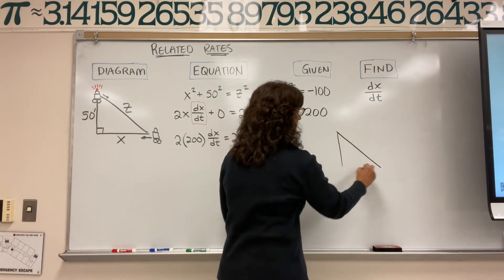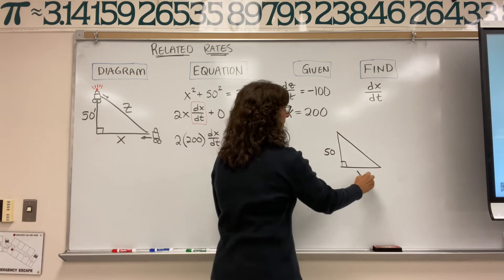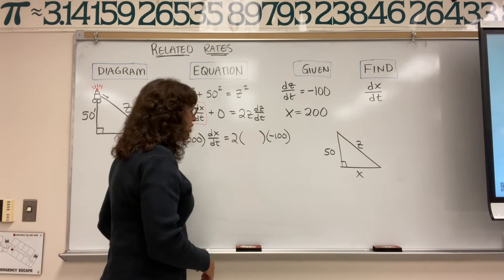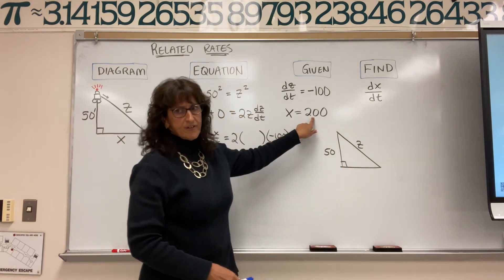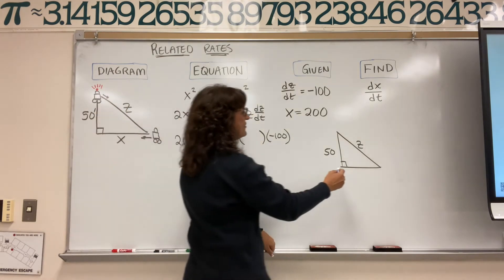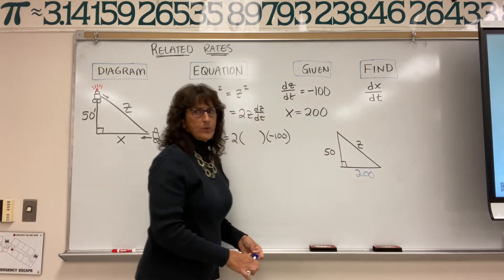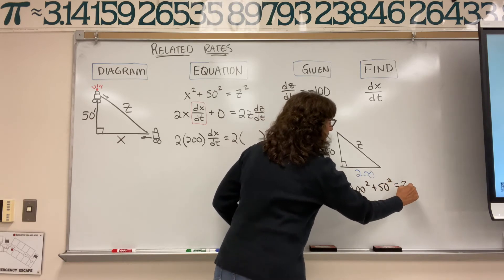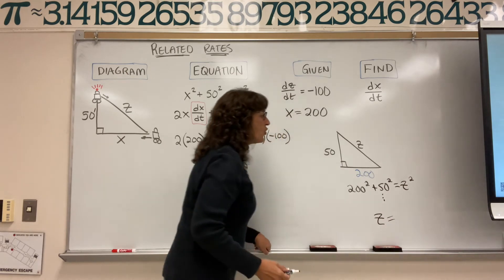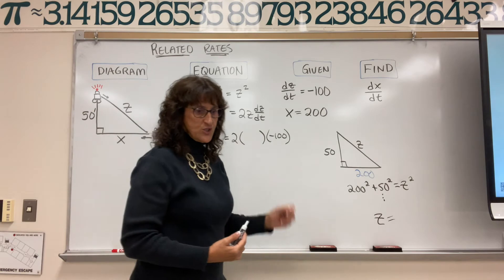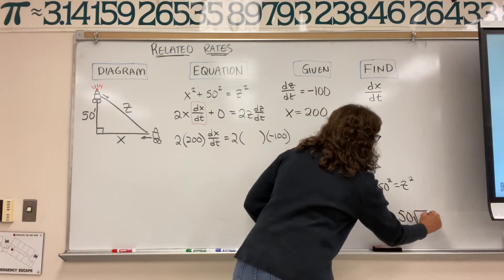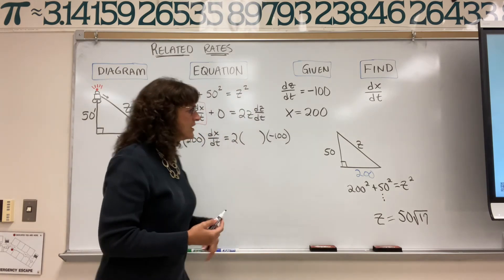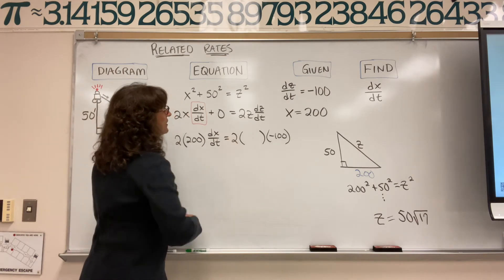Off to the side, looking at our diagram: we have 50, X, and Z. The patrolman is 50 feet off the road — that's not changing. At the instant x is 200, we need to find z to plug into the rate of change equation. So we use Pythagorean theorem: 200 squared plus 50 squared equals z squared. When you square those numbers, add them, and take the square root, you get z equals 50 radical 17 — that's the exact value. The decimal is around 206 point something, but the exact answer is 50√17.